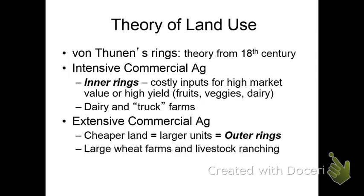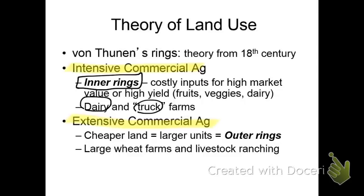The theory of land use gives us what we call these rings, or concentric ring theory, from the 18th century. We really have to know two different terms here. We need to remember what intensive commercial agriculture and extensive commercial agriculture are. Intensive types of agriculture would be things like dairy or truck farms, and these are located on the inner rings of his model. Extensive commercial activities like wheat farming and livestock ranching are found in the outer rings.